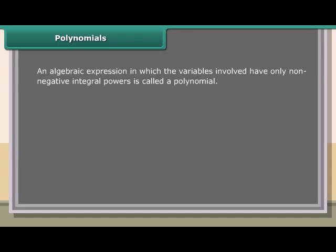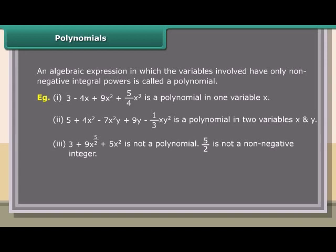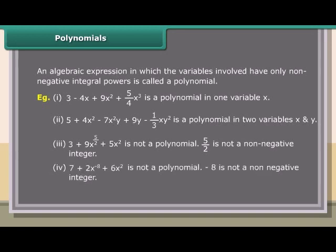Polynomials: an algebraic expression in which the variables involved have only non-negative integral powers is called a polynomial. Example 1: 3 minus 4x plus 9x² plus (5/4)x³ is a polynomial in one variable x. Example 2: 5 plus 4x² minus 7x²y plus 9y minus (1/3)xy² is a polynomial in two variables x and y. Example 3: 3 plus 9x^(5/2) plus 5x² is not a polynomial since 5/2 is not a non-negative integer. Example 4: 7 plus 2x^(−8) plus 6x² is not a polynomial since −8 is not a non-negative integer.